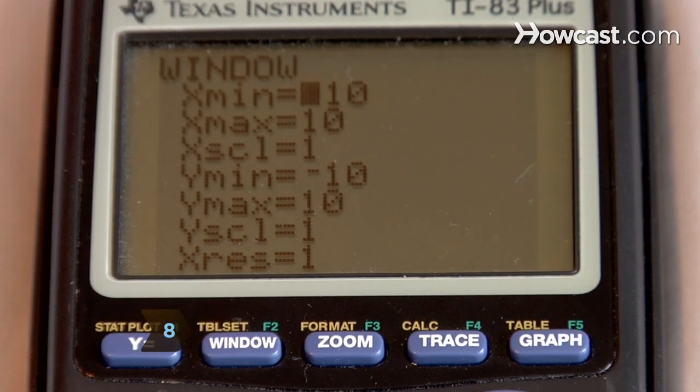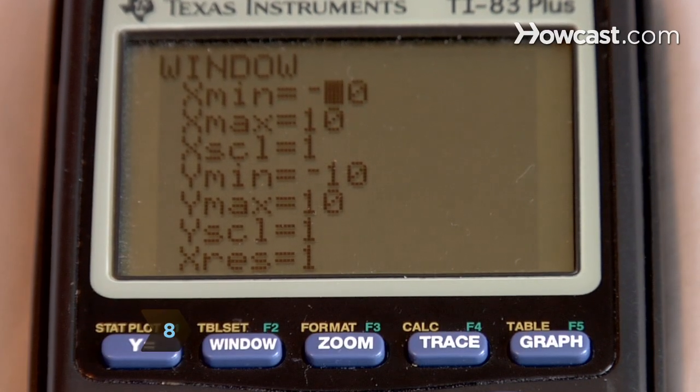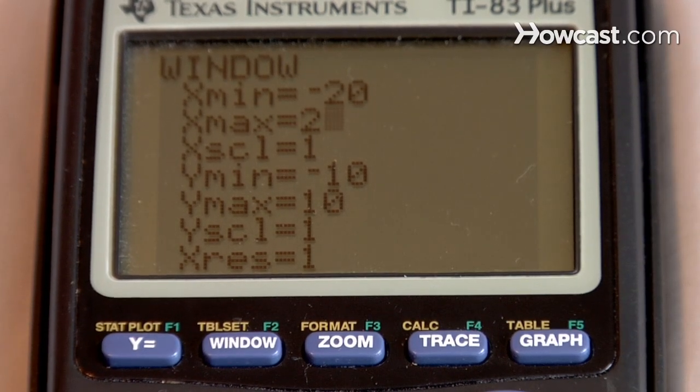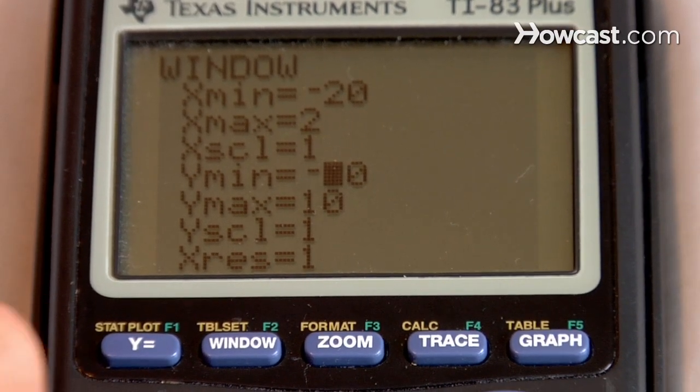Step 8: Adjust the picture of the graph by pressing the window button. Adjust the values of the X and Y axis and the X and Y minimum to show key aspects of the graph.